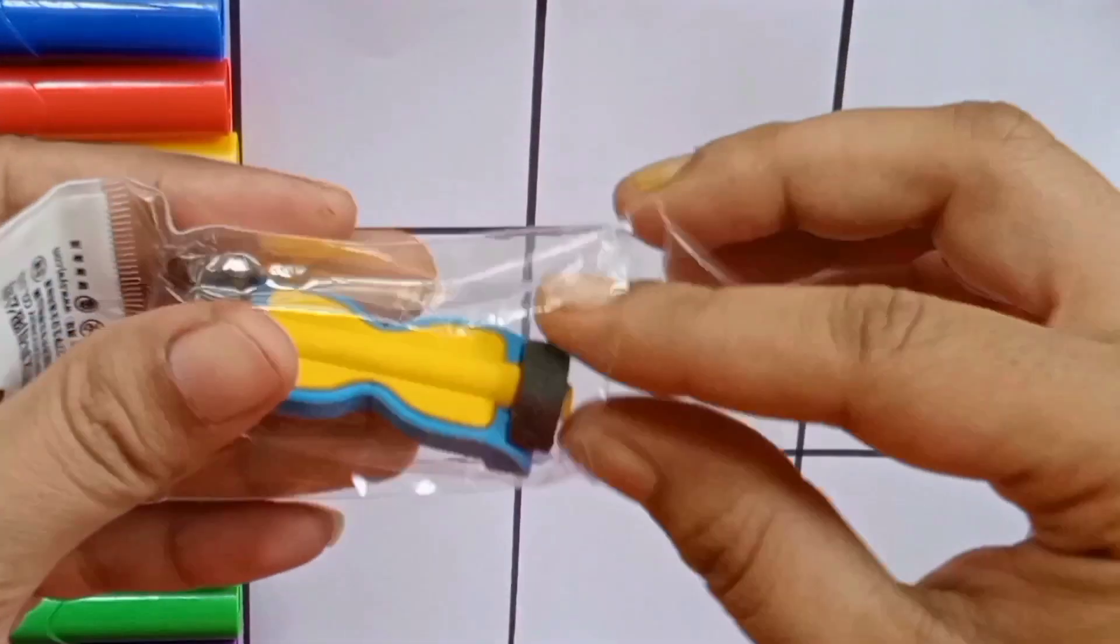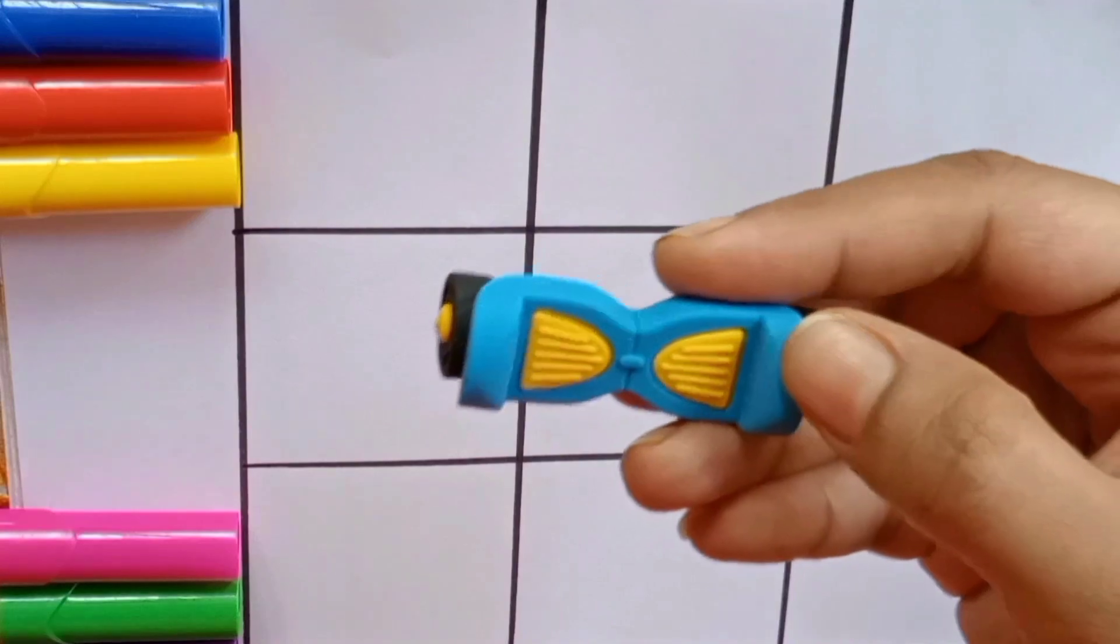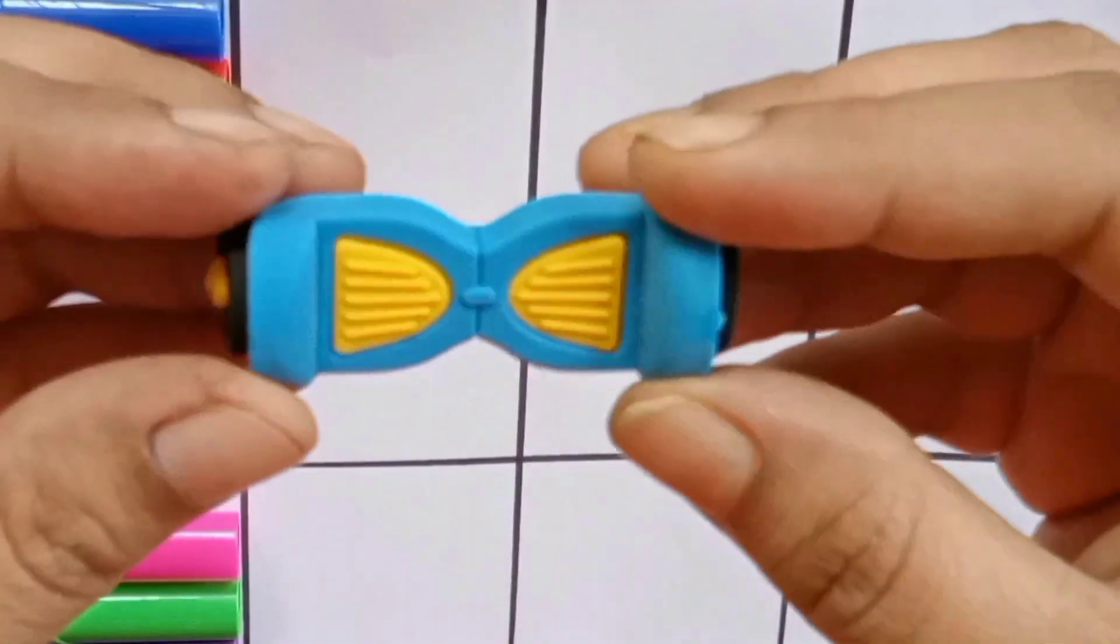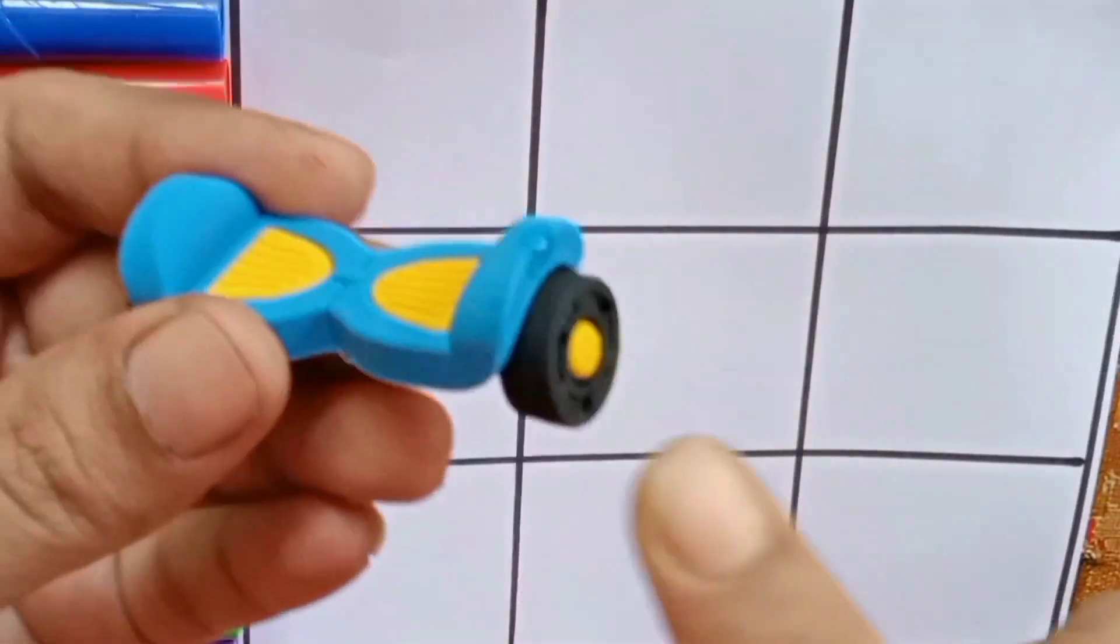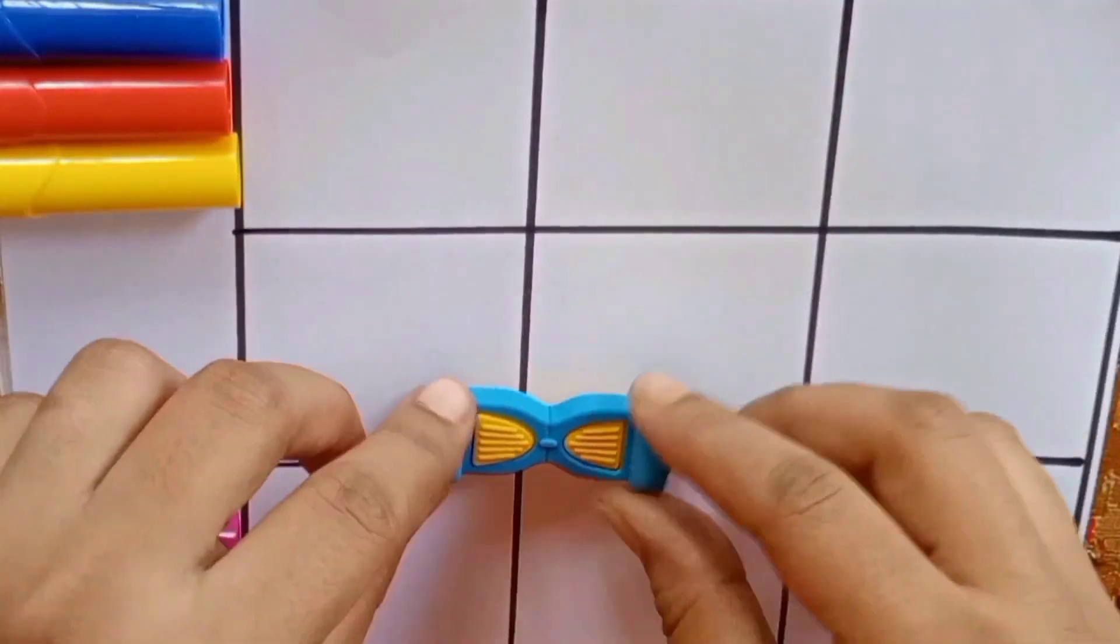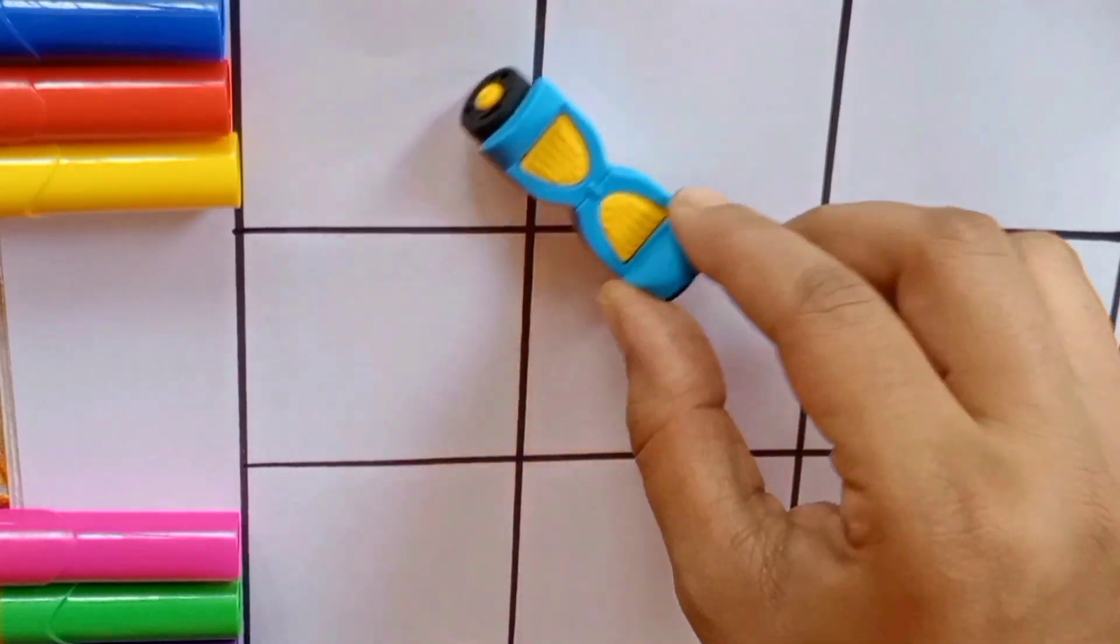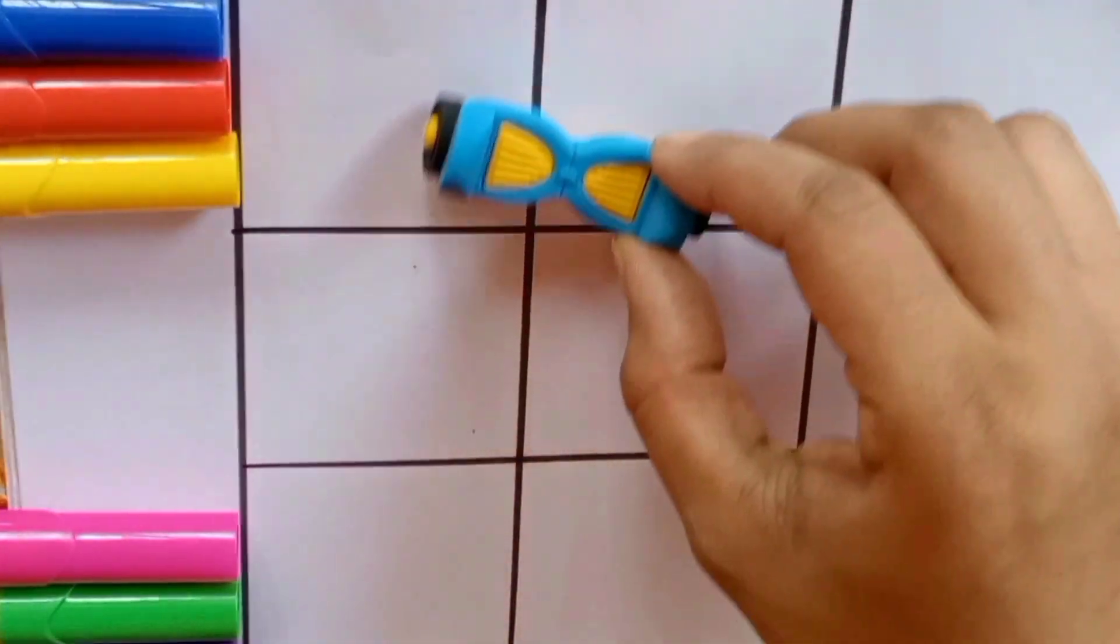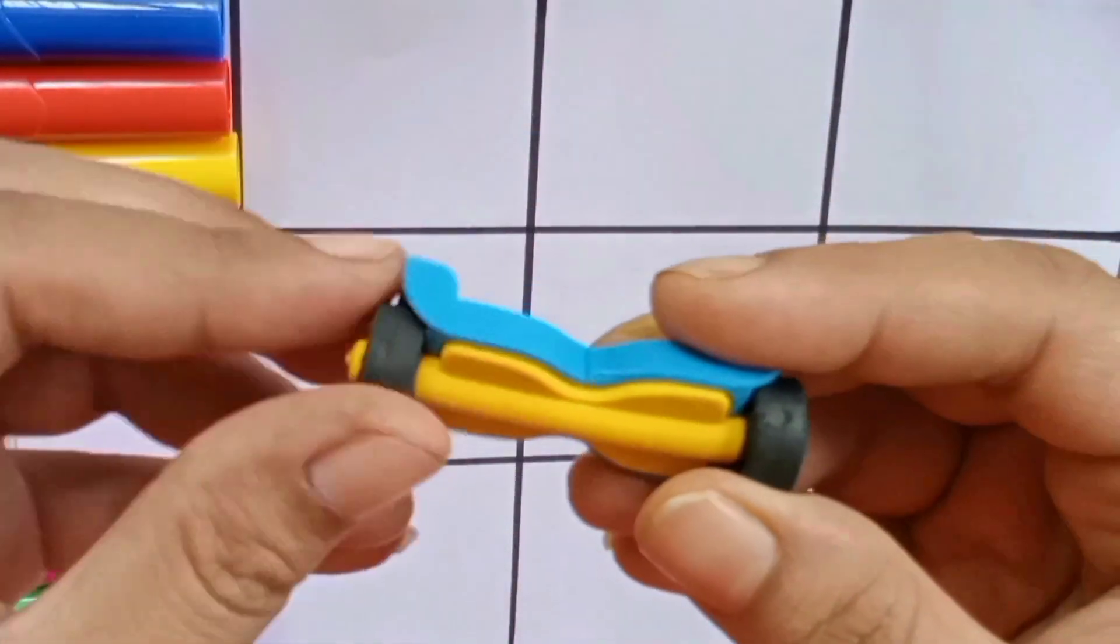Blue color, yellow color, black color. You can also separate them. Let's separate the wheels.